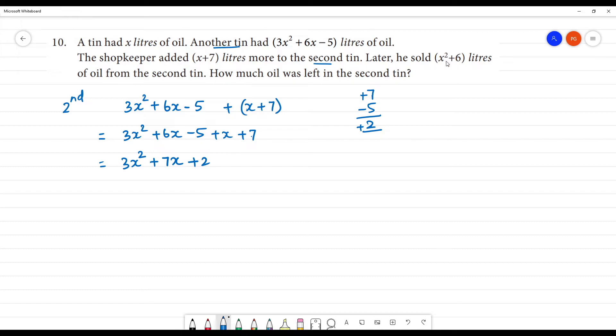Later, he sold x² + 6 liters. So, we sold. Sold means what? Subtract. That is x² + 6 liters of oil. Subtract.